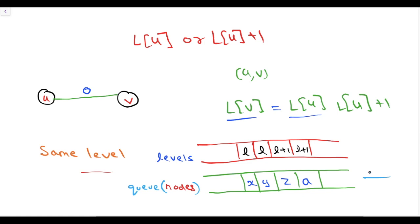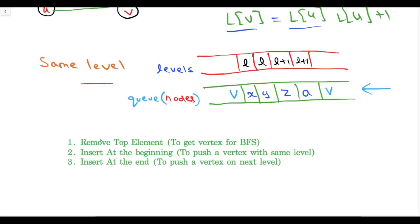Suppose at some point this is the situation of our queue. When the level of V is equal to the level of U then we will push V in front of the queue. If the level of V is equal to the level of U plus 1 then we will push V at the end of the queue at this position. So if we have a data structure in which we can remove top element, insert at the beginning, insert at the end in O(1) then we can solve this problem in O(E+V) complexity. In C++ there exists a data structure which can do these three operations in O(1) which is called double-ended queue or deque.